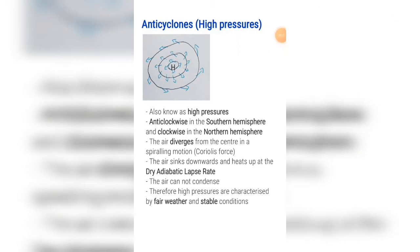Anti-cyclones, also known as high pressure cells. They rotate anti-clockwise in the southern hemisphere and clockwise in the northern hemisphere. The air diverges from the centre in a spiralling motion — this is due to the Coriolis force.